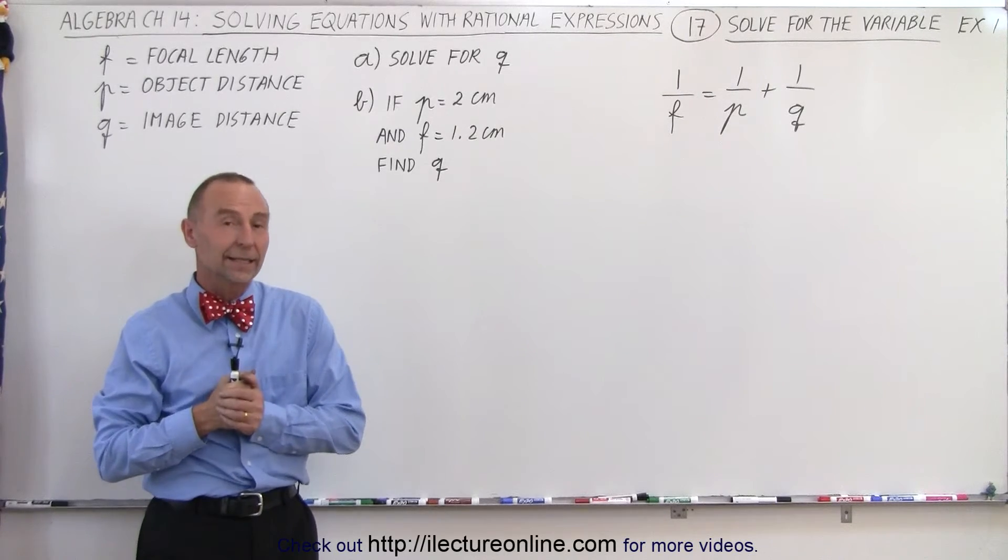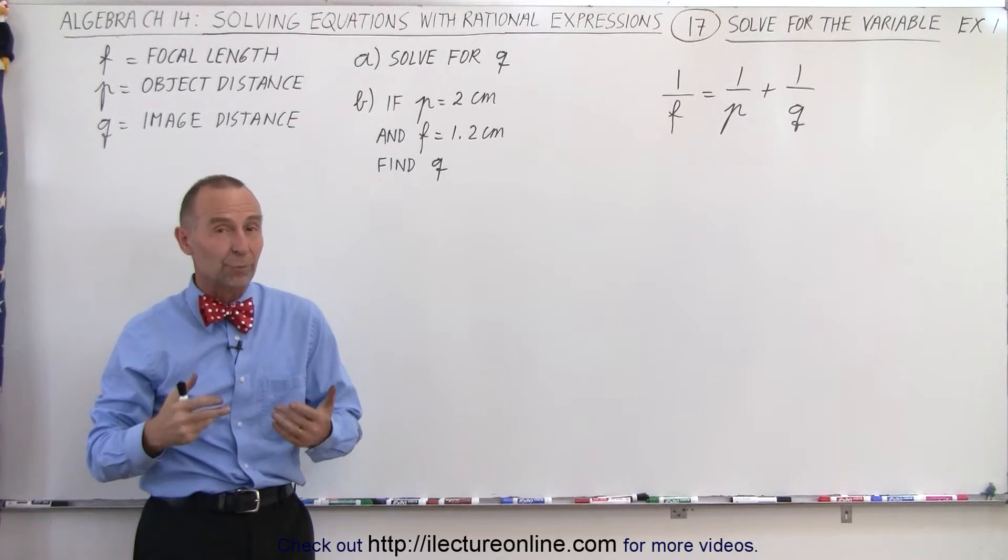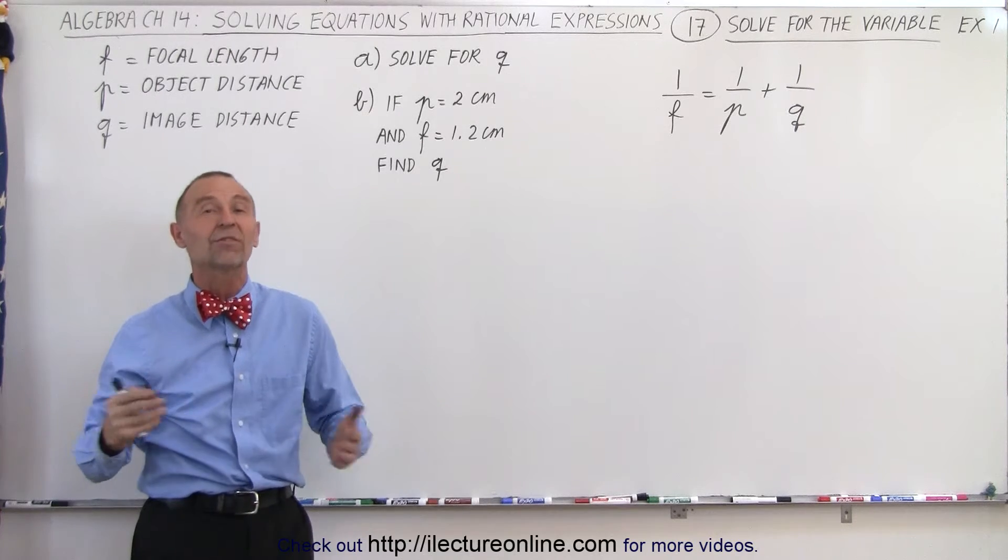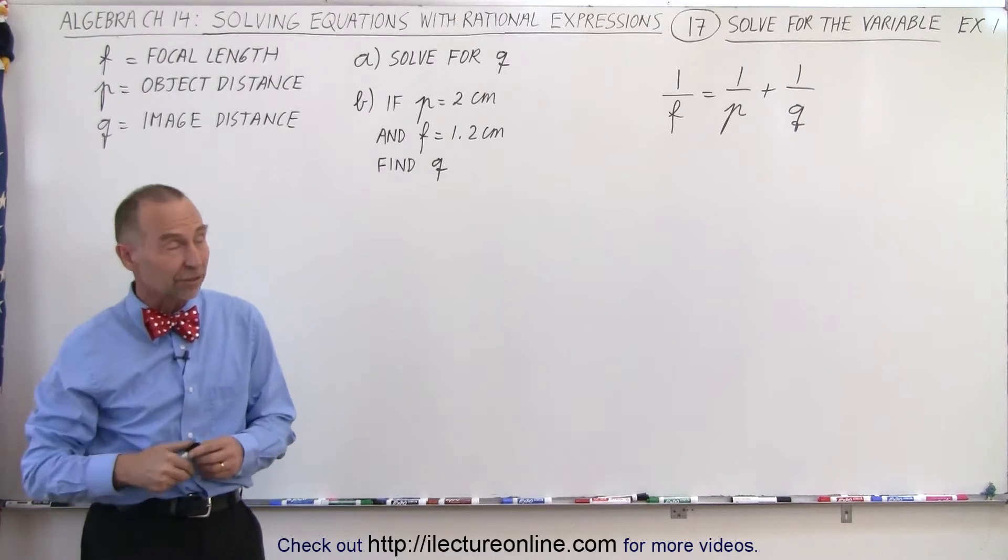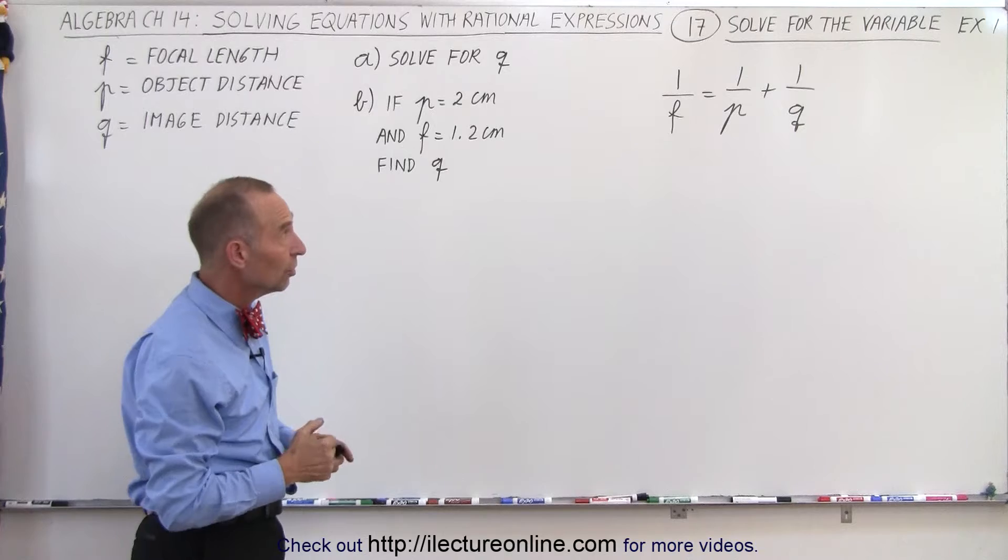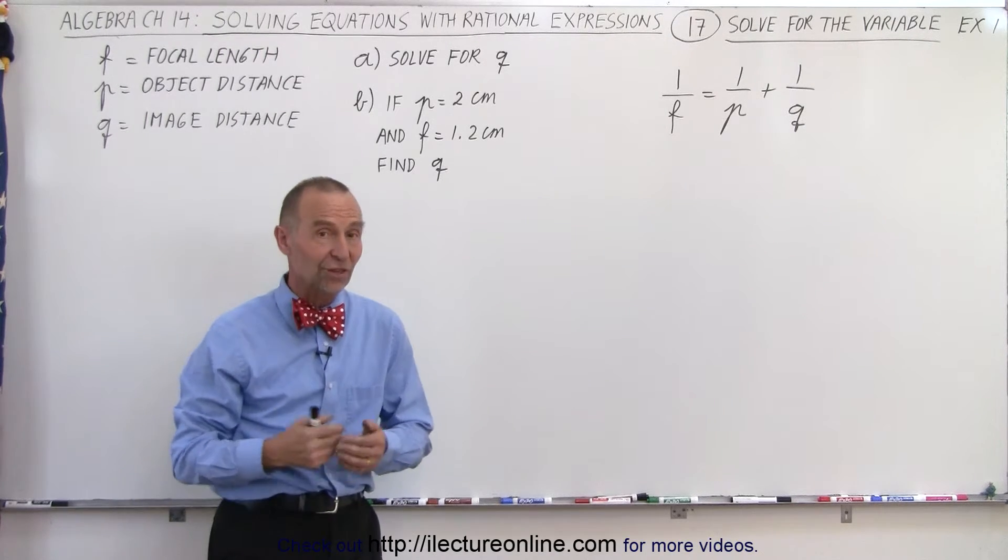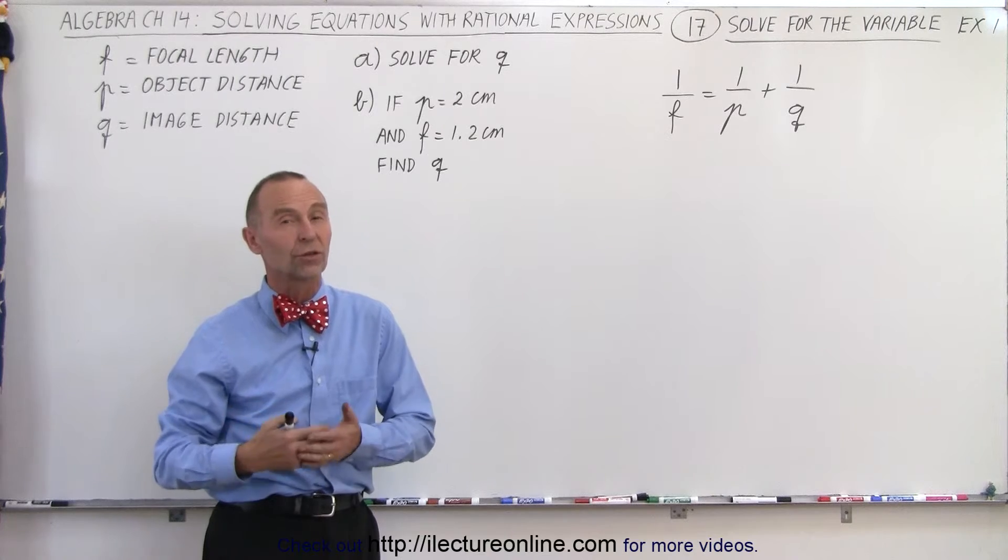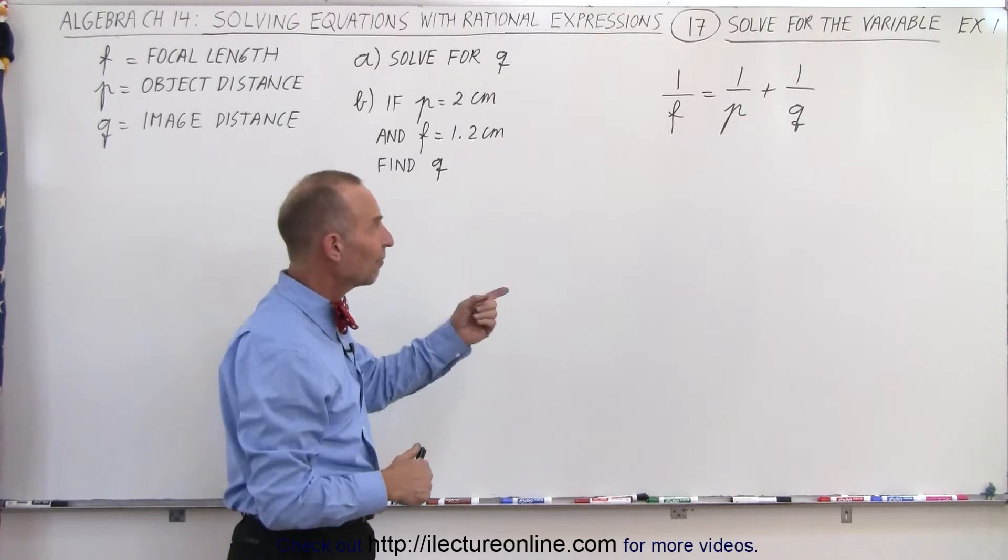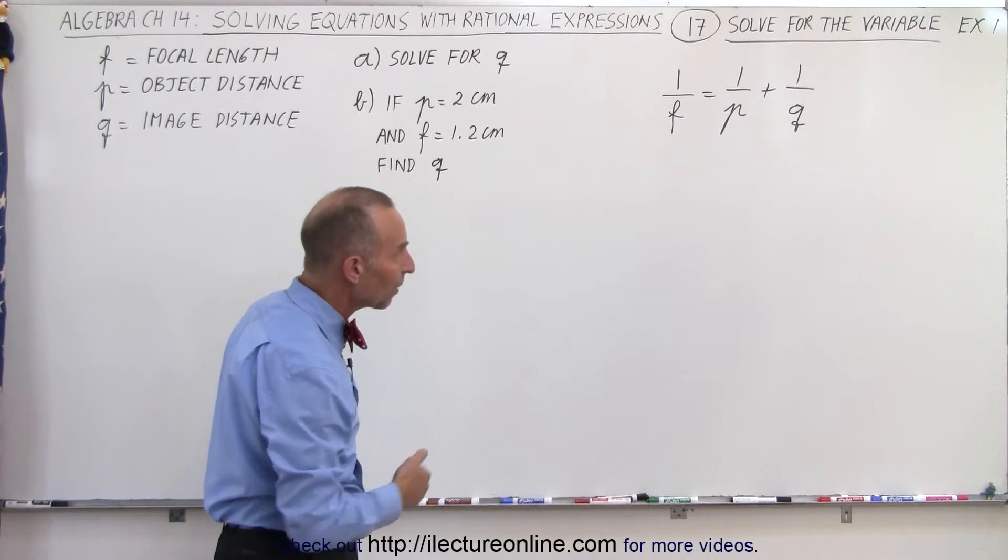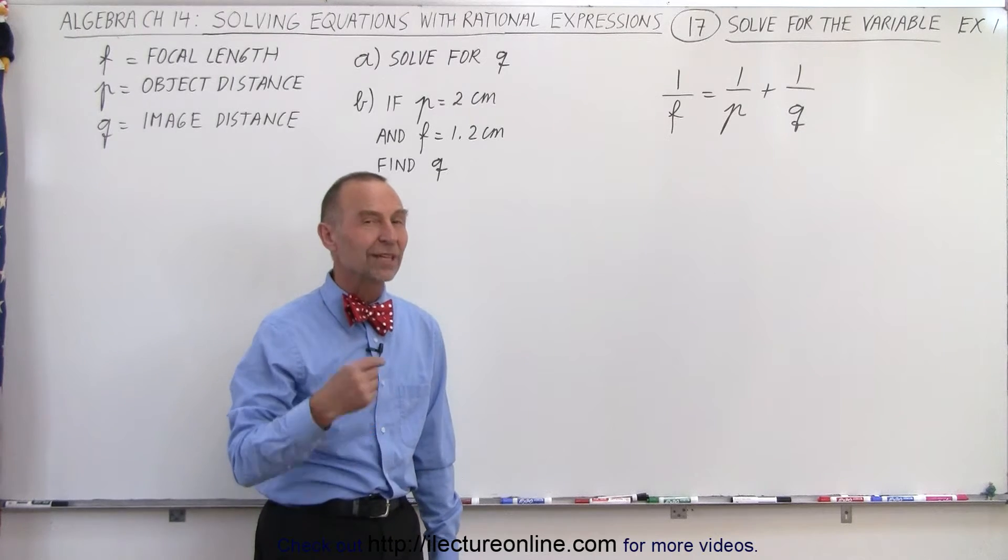Welcome to White Lecture Online! Equations with rational expressions are found everywhere in science, including in physics. And here we have an equation, 1 over F equals 1 over P plus 1 over Q, which is actually a very famous equation, it's called the lens equation, where F is the focal length, P is the object distance, and Q is the image distance.